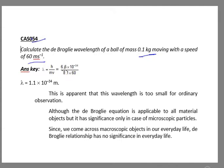The value of h is 6.6 × 10^-34, mass is 0.1 kg, and velocity is 60 meters per second. Calculating directly, lambda equals 1.1 × 10^-34 meters.